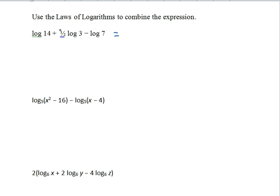So in the first case, we have a coefficient of a half, and so I'm going to write the given expression as common log of 14 plus common log of 3 to the one half minus common log of 7.